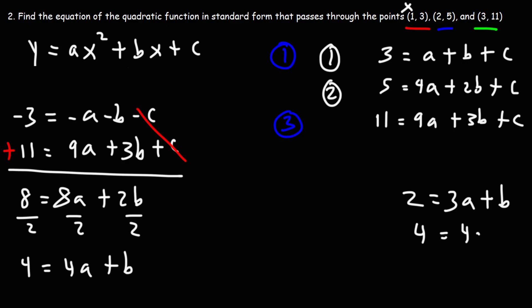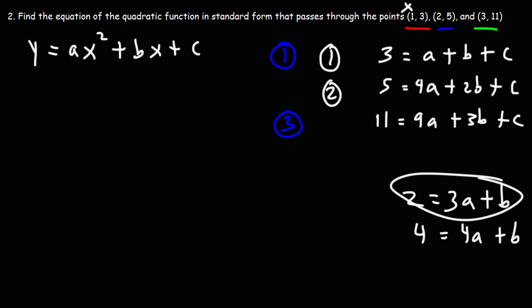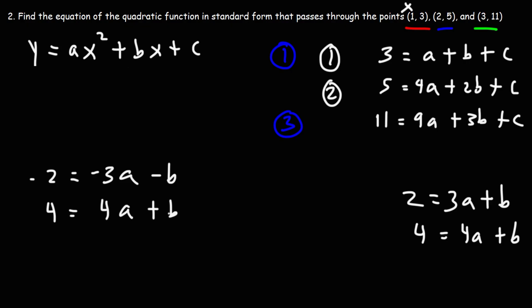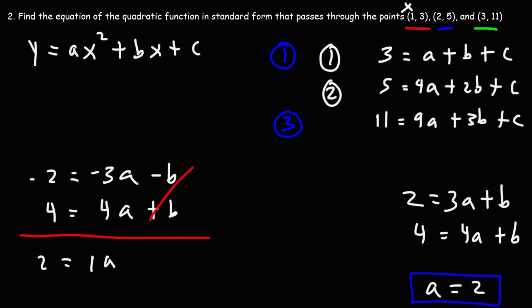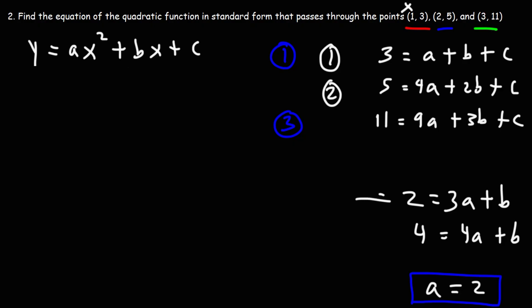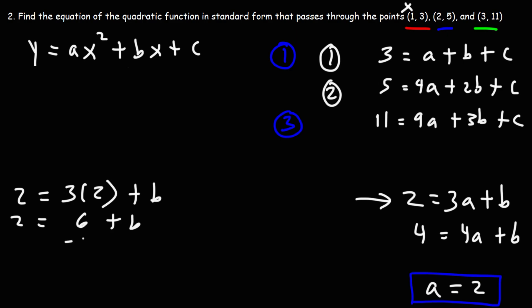So now we have two equations and two variables, and it looks like we can easily cancel b. Let's multiply the first equation by negative 1, so we have negative 2 is equal to negative 3a minus b. The b's will cancel. Negative 2 plus 4 is 2, and negative 3a plus 4a is 1a. So we have that a is equal to 2. Now let's determine the value of b using the equation 2 is equal to 3a. Replacing a with 2: 2 times 3 is 6. Subtracting both sides by 6 — 2 minus 6 is negative 4. So b is equal to negative 4.